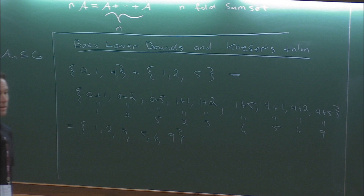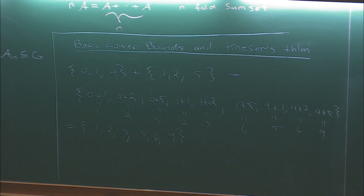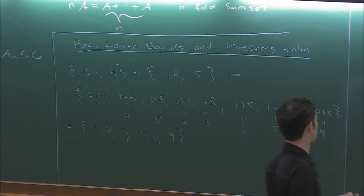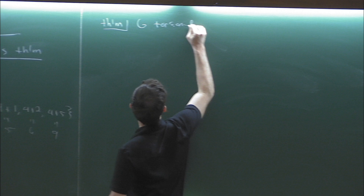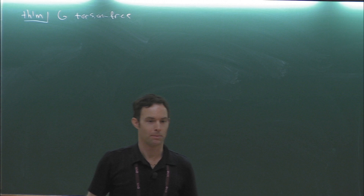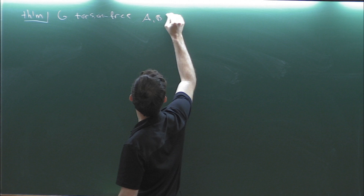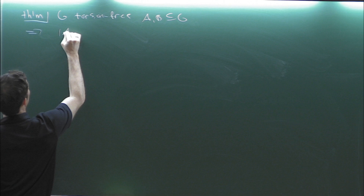There's nothing really complicated going on when defining this basic concept, but the questions get fairly complicated soon enough. One of the main questions is how large sumsets can grow. Here's a very basic lower bound: if G is torsion-free and A, B are finite non-empty subsets, then |A+B| ≥ |A| + |B| - 1.